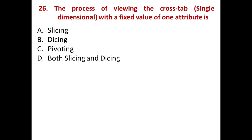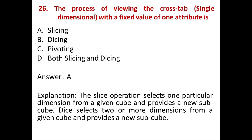Next question: The process of creating a cross-tab single-dimensional with a fixed value of one attribute is? Option A: Slicing. B: Dicing. C: Pivoting. D: Both slicing and dicing. Answer is Option A, Slicing. The slice operation selects one particular dimension from a given cube and provides a new sub-cube. Dice selects two or more dimensions from a given cube and provides a new sub-cube. That's why the answer is A, Slicing.